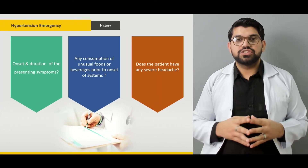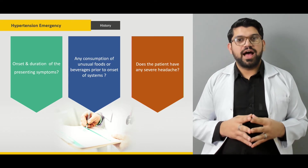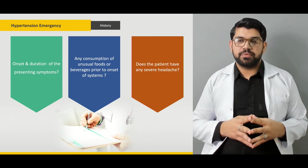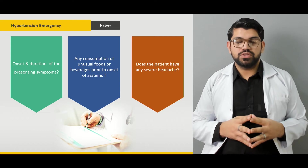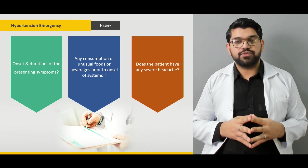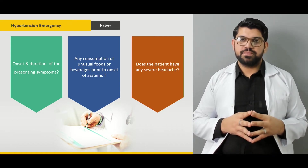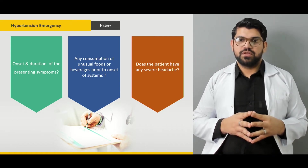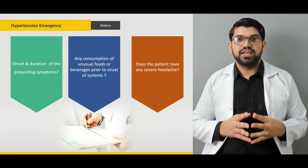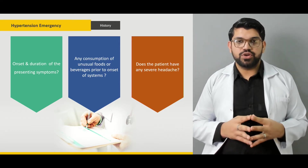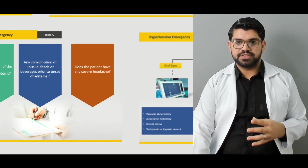Next we'll talk about the history — how a patient is presented and what to ask for in a patient with acute hypertensive emergency. What are the things to look for in the history of a patient with acute hypertensive emergency?